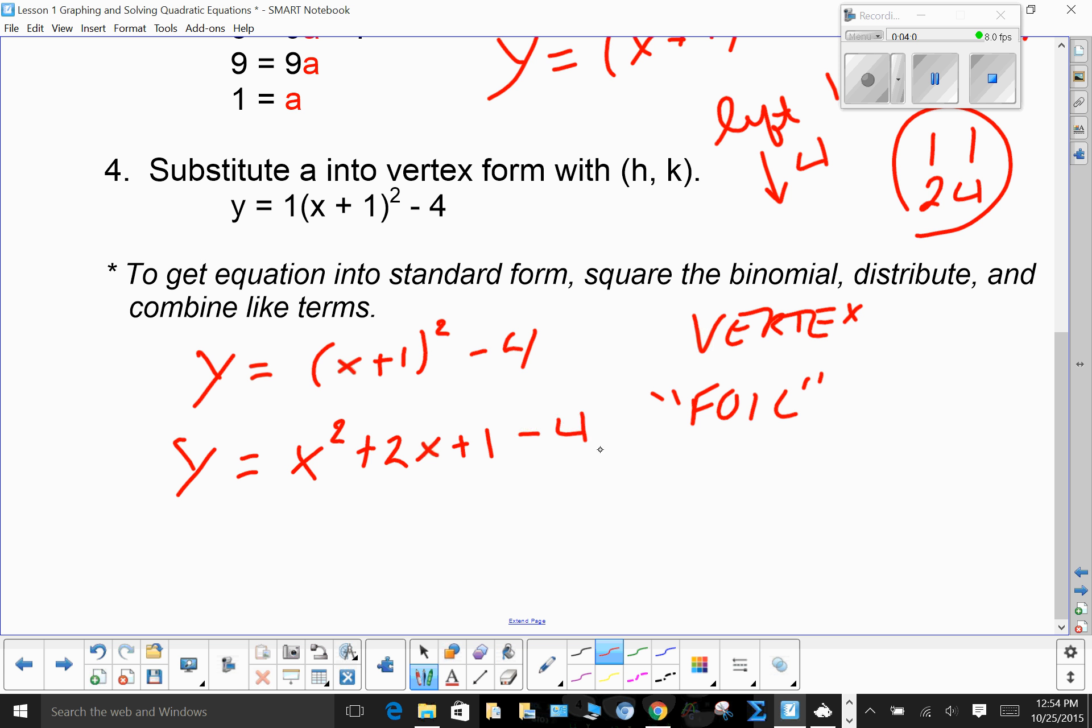x times x is x² plus an x plus an x is the 2x plus 1 is the plus 1. Then I have my minus 4. And over here, I'll just put this down because I know some people haven't done it in a while. Here's where you get your 2x. Now I'm going to combine my like terms. y = x² + 2x. 1 minus 4 is -3. This is now standard form.